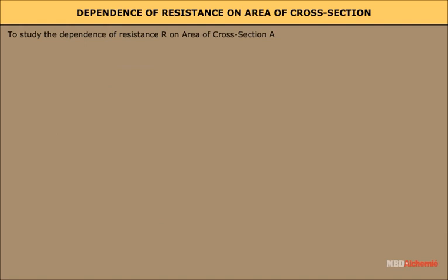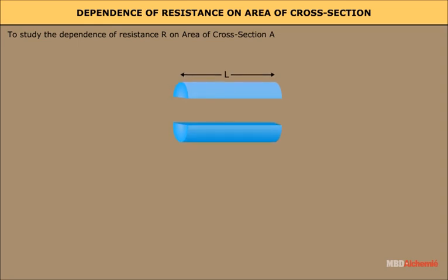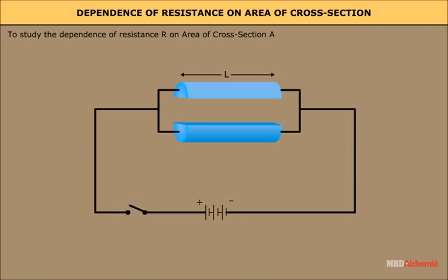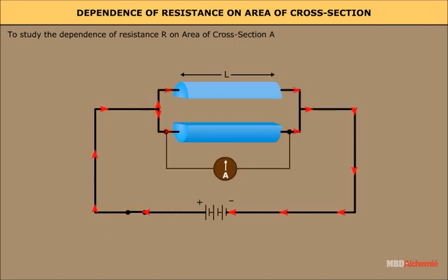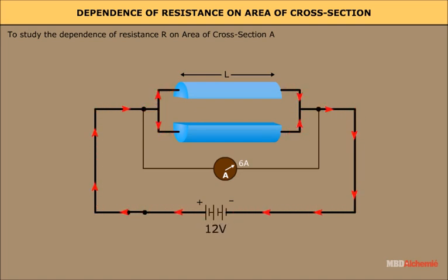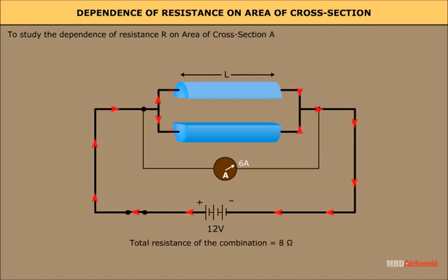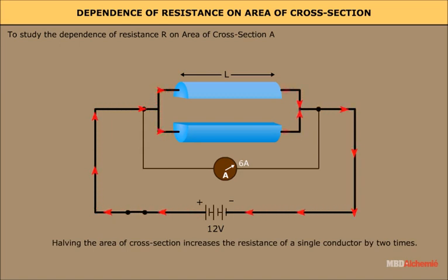To study the dependence of resistance R on area of cross section A, let us take a conductor of length L and area of cross section A. The conductor is cut lengthwise so that the area of cross section becomes half. The current through each half-conductor is found to be 3 Amperes, and the total current through the combination is 6 Amperes. The potential difference across each conductor is 12 volts. The resistance of the single conductor is 12 volts by 3 Amperes, that is 4 Ohms, and the total resistance of the combination is 8 Ohms. Thus, halving the area of cross section increases the resistance of a single conductor by 2 times.